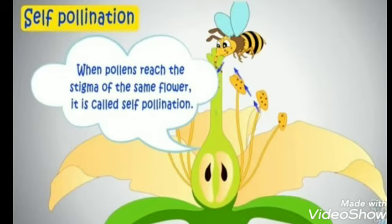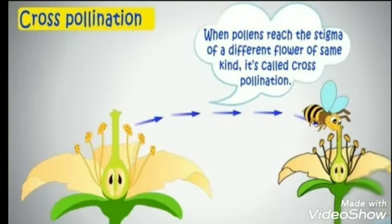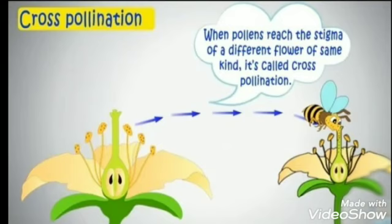Cross-pollination: when pollens reach the stigma of a different flower of the same kind, it is called cross-pollination. That is, it is the transfer of pollen grains from the anther of one flower to the stigma of a flower of another plant of the same type. Insects and wind are the main agents of cross-pollination. A pollinating agent is necessary for cross-pollination.